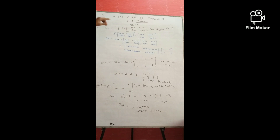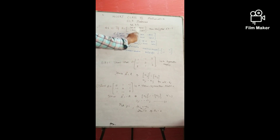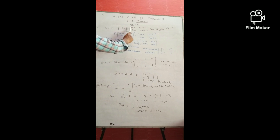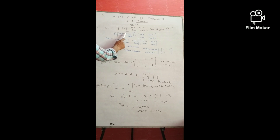In Exercise 3.3, I am taking Question 6 first; the rest are basic questions you can try after understanding transpose and symmetric/skew-symmetric matrices. Given A = [cos α, sin α; −sin α, cos α], we need to verify that A^T · A = I. First, let's find A transpose.